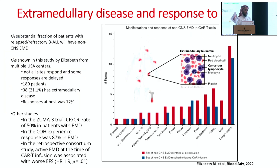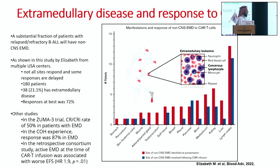Regarding extramedullary disease: those with non-CNS extramedullary disease tend to do less favorably after CAR-T treatment. In a study from multiple USA centers of 180 patients, 21% had extramedullary disease. Response at best was 72%. Not all organs respond to CAR-T infusion. In the ZUMA-3 study, CR rate was 50% lower in extramedullary disease, and in a larger retrospective consortium study, worse event-free survival was also demonstrated in extramedullary disease.